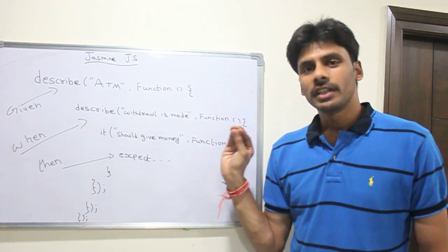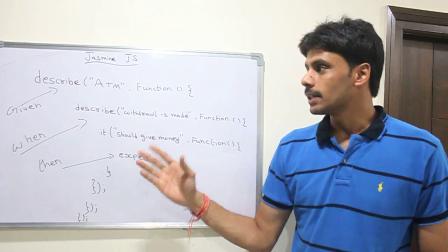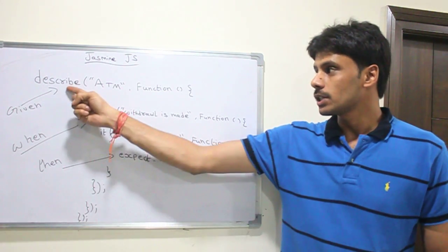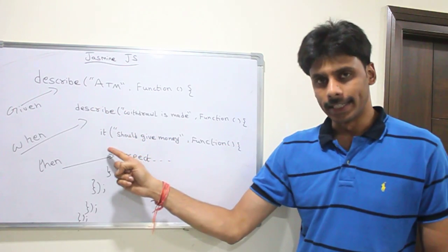Jasmine beautifully fits into that BDD by providing us the syntax we need to do BDD in JavaScript. There are two important functions, the describe and then the it.